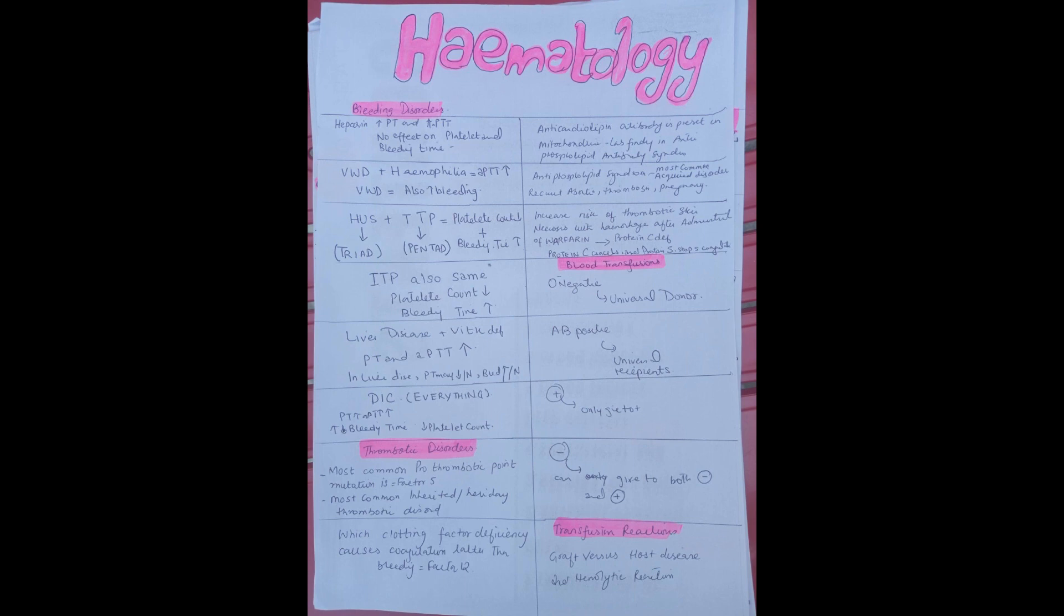Now we will see the antiphospholipid antibody syndrome. Anticardiolipin antibody is present in the mitochondria. That is also the lab finding in the antiphospholipid antibody syndrome, which is the most common acquired disorder.